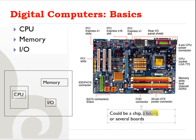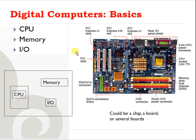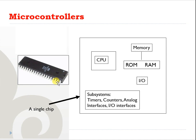A digital computer could be in the form of a single chip, it could be in the form of a board, or it can consist of several boards connected to each other. In this figure you can see a board which has multiple elements on it — there are slots for the memory, we have the CPU, and there are interfaces for the inputs and outputs. Depending on how complex the digital computer is, you can find them in different forms, but all of them have these three main components.